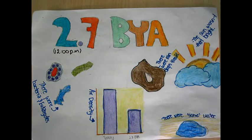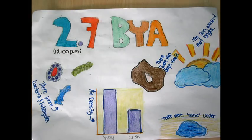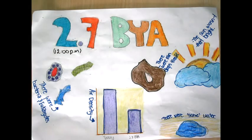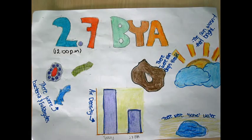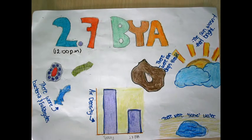2.7 billion years ago, which is 12 p.m., there were a lot of bacteria and eukaryotes living. The air density was twice smaller than today. Sometimes scientists find there were some rain fossils. There was some water, but not a lot. The sun wasn't really strong, which means it wasn't really bright.